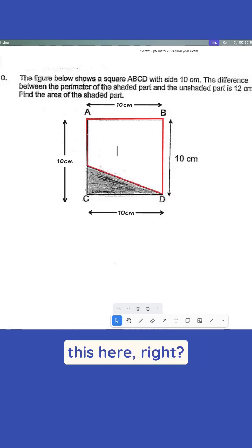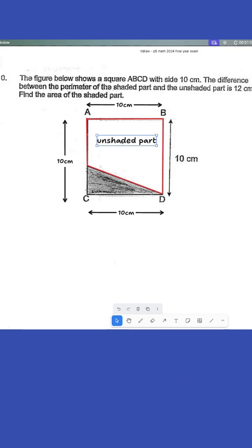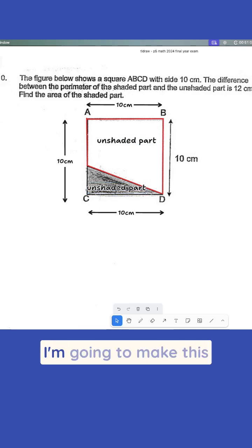So I'm going to put this here, I'm going to say this is the unshaded part. I think it's pretty obvious. And we also have the shaded part over here. I'm going to make this small and yellow so it's easier to see. Unshaded part.